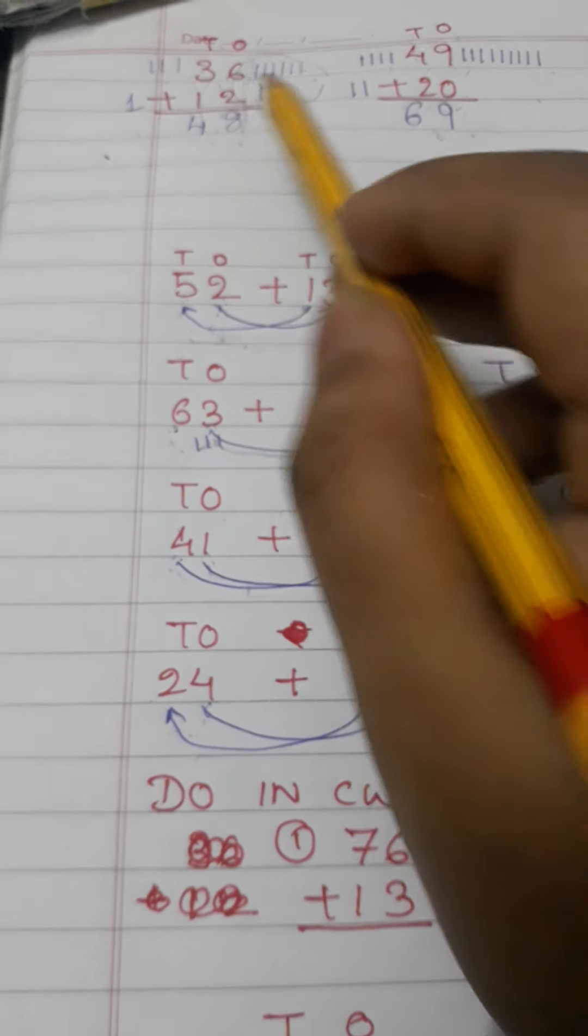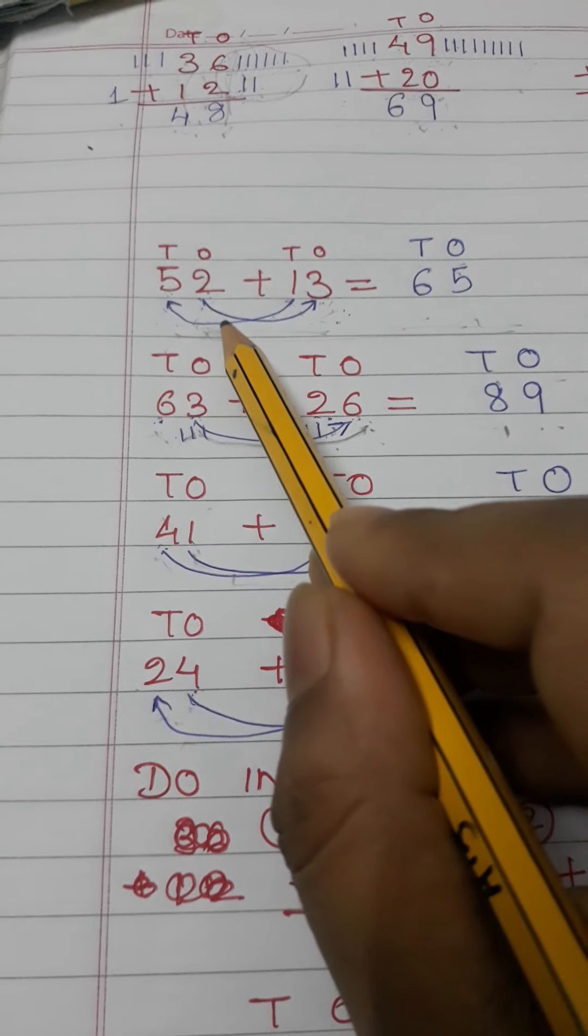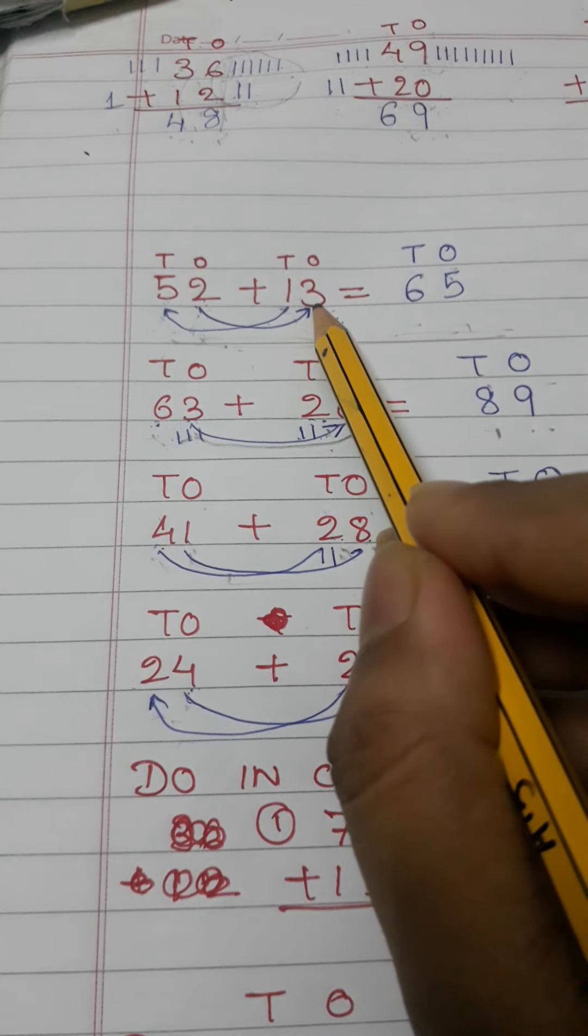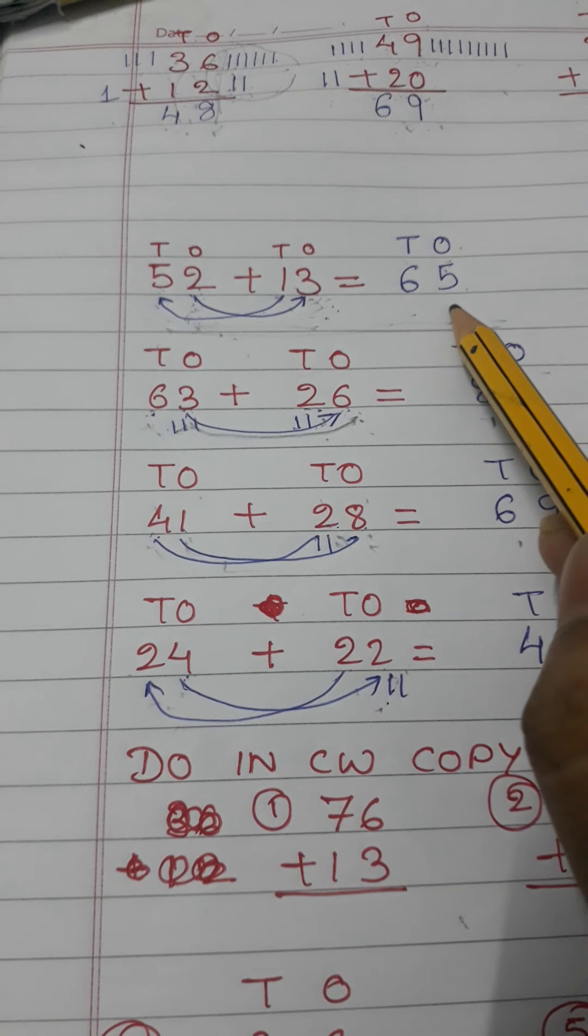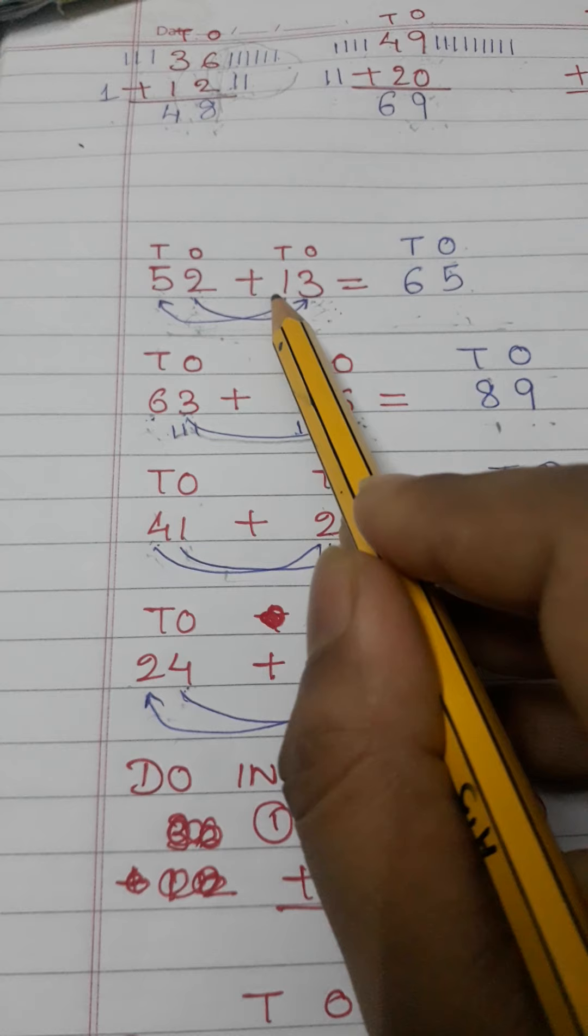Similarly here also I will add ones digit first. So here I have three, here I have two. Three plus two makes five. I will write in the place of ones. And then I will go to tens: five plus one makes six. I will write six below tens.